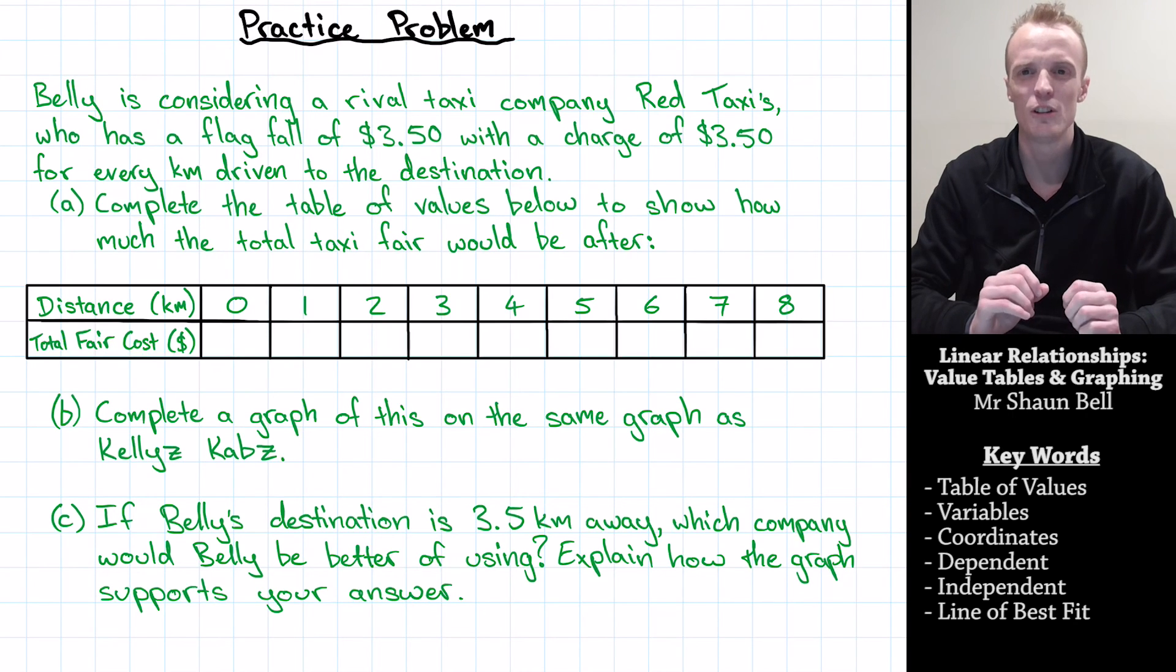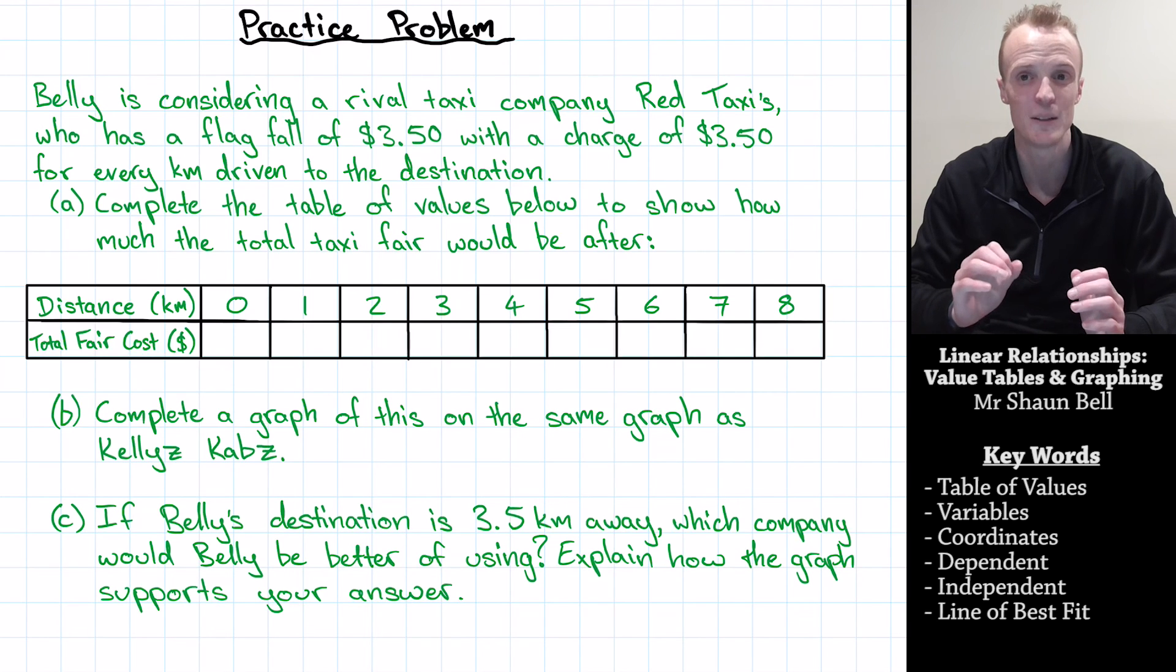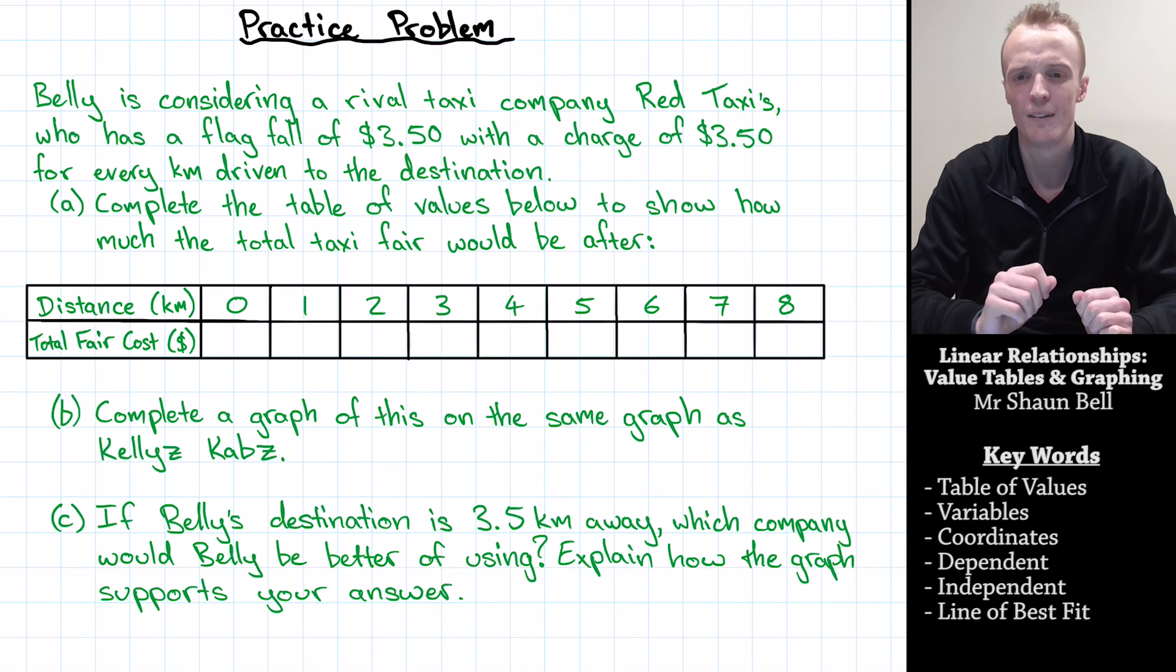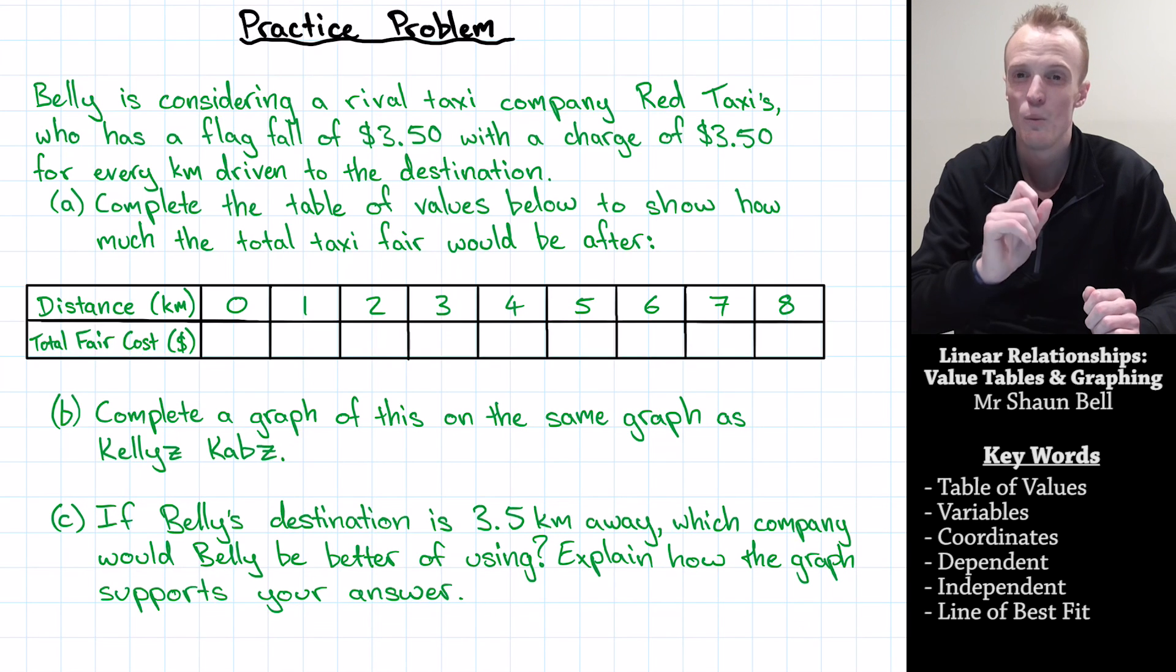So now it's your turn. What I want you to do is answer this. Belly is considering a rival taxi company called Red Taxis, who has a flag fall of $3.50 and a charge of $3.50 for every kilometre driven to the destination. What I want you to do is complete the table of values below to show how much the total taxi fare would be after zero kilometres, one kilometre, two kilometres, all the way through to eight kilometres. Once you've done that, I want you to complete a graph of this on the same graph as the Kelly's cabs graph. And then consider this, if Belly's destination is three and a half kilometres away, which company would Belly be better off using? Kelly's cabs or Red's taxis? And I want you to explain how the graph that you've produced supports your answer.